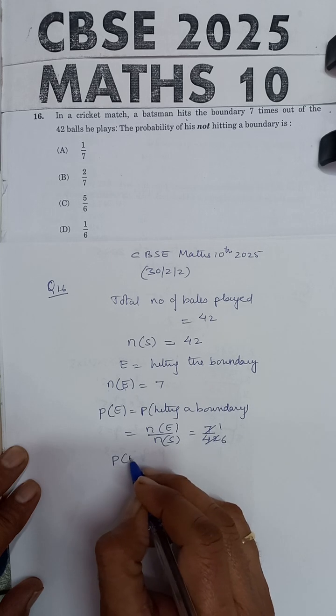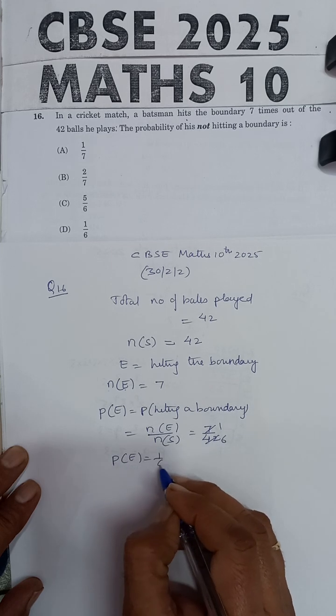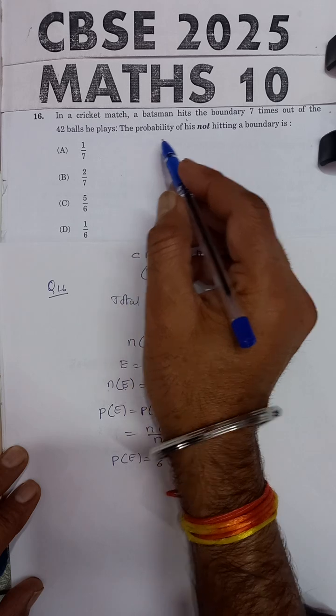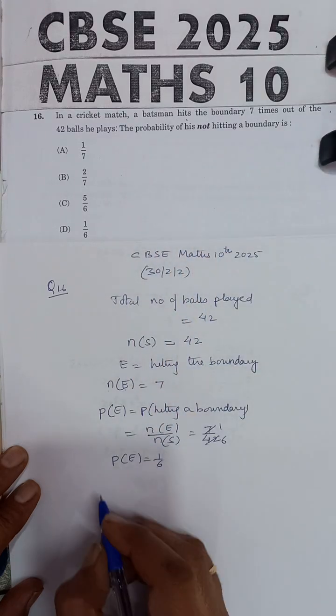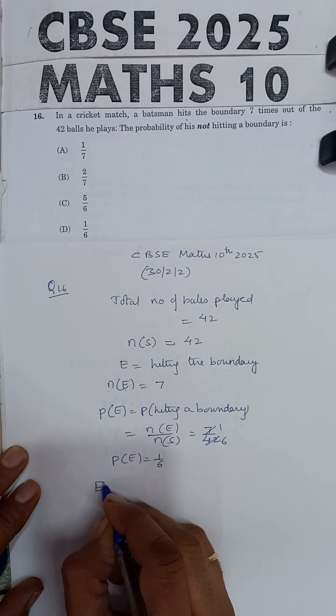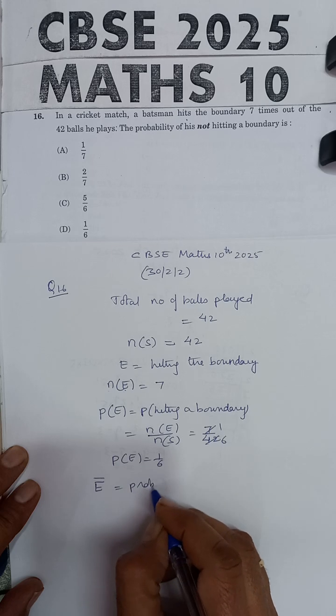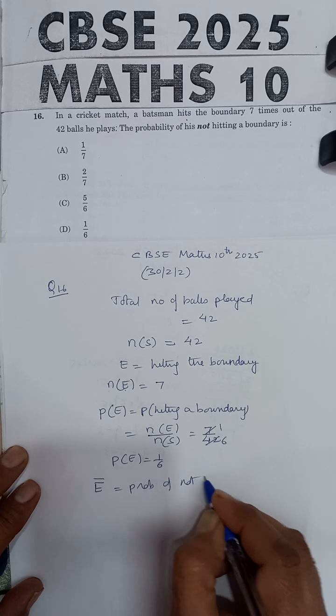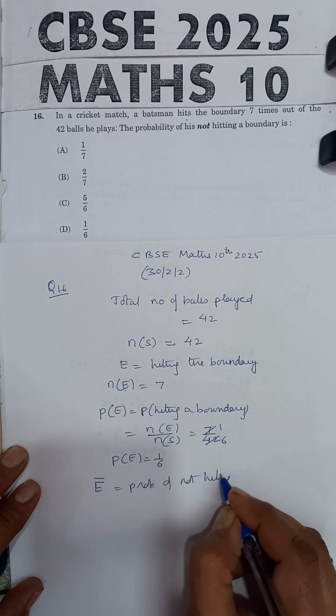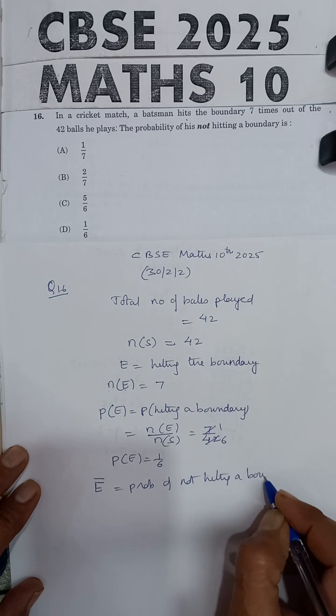But in the question, it is given the probability of his not hitting the boundary. So E complement, probability of not hitting a boundary, we need to find.